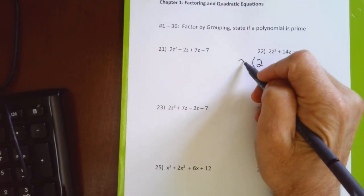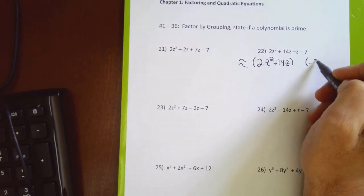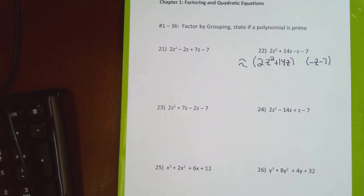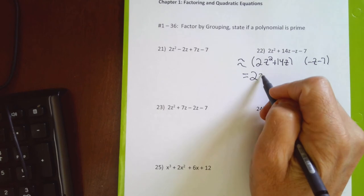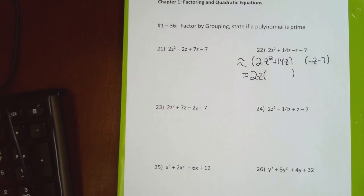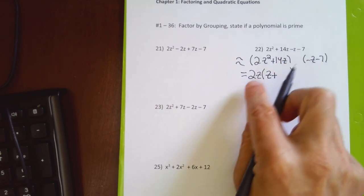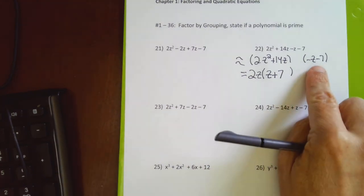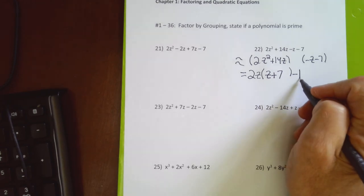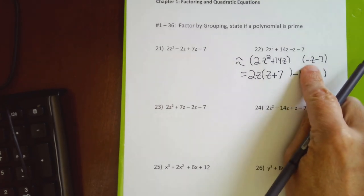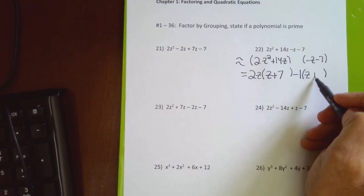For problem 22, I stuff the negative sign into the second parenthesis. In the first parenthesis, between 2 and 14 I can factor out 2, and between z² and z I factor out z. Dividing: 2 ÷ 2 = 1, two z's minus one z leaves one z, and 14 ÷ 2 = 7 after the plus sign. In the second parenthesis both terms don't have a z and the leading coefficient is negative 1, so I factor out negative 1 and flip signs: negative z becomes positive z, and negative 7 becomes 7.